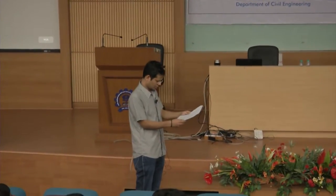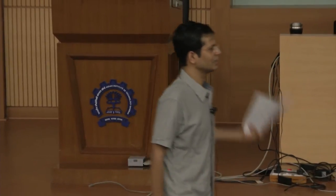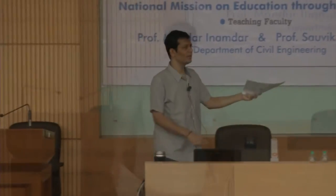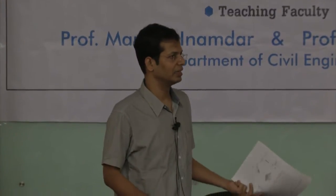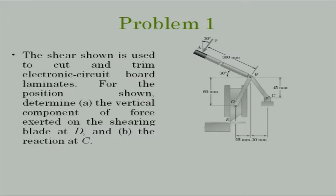The two-force member DB gives a force of about 3.076 kN. But we are asked for the vertical reaction at D, and that is what the problem demands. The force in member DB is fine, but what we want is the vertical reaction at D specifically.